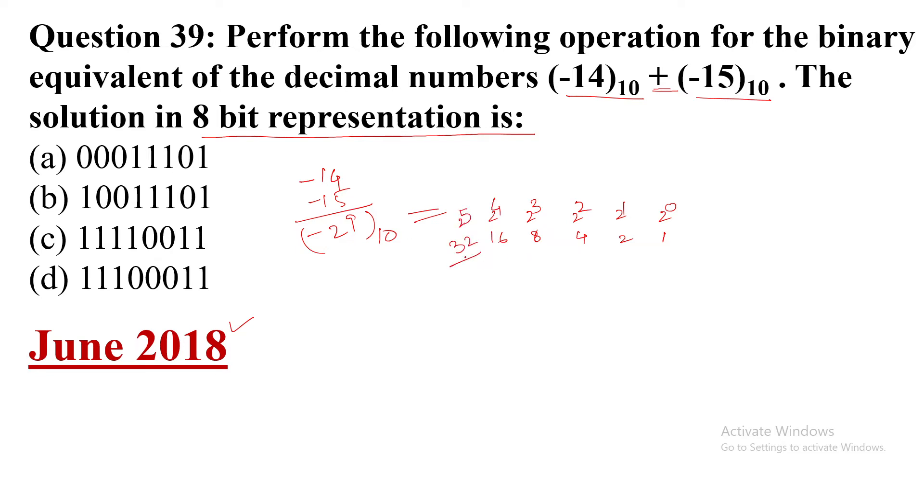32 is bigger than 29 so we will not use it. From 16 we will take, so 29 minus 16 equals 13. 16 plus 8 plus 4 plus 1 equals 13. So the binary representation is 11101 for 29.